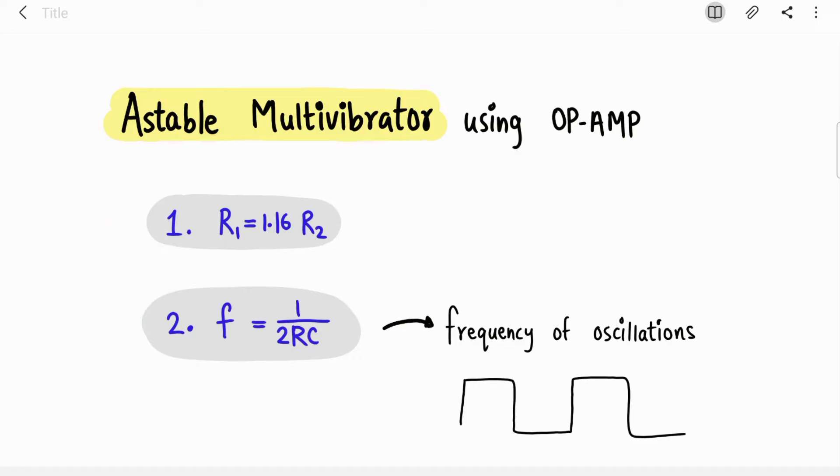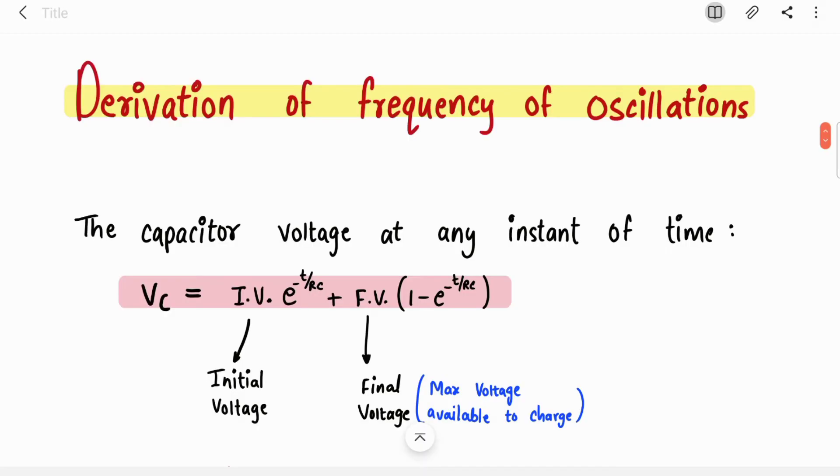We have already covered the working of astable multivibrator in the last video. We studied how this circuit produces the square wave. Now the frequency with which this square wave is generated is the frequency of oscillations, which is 1 upon 2RC for astable multivibrator. We are going to see where this equation comes from and derive it. It is very simple derivation, we will quickly go through it.